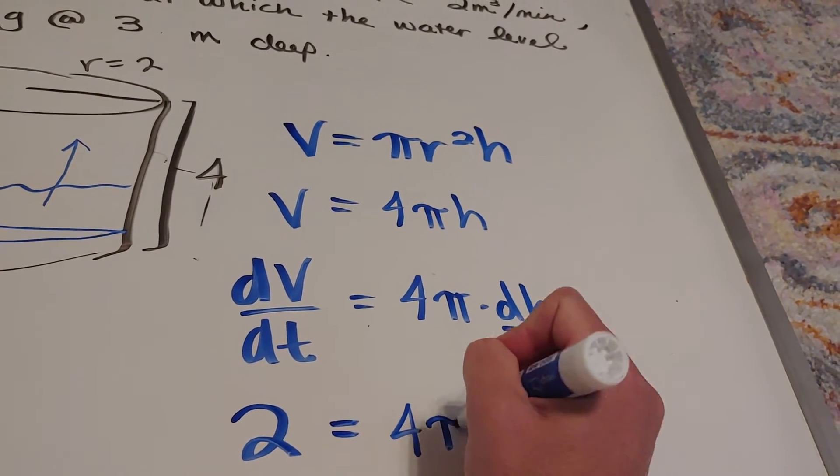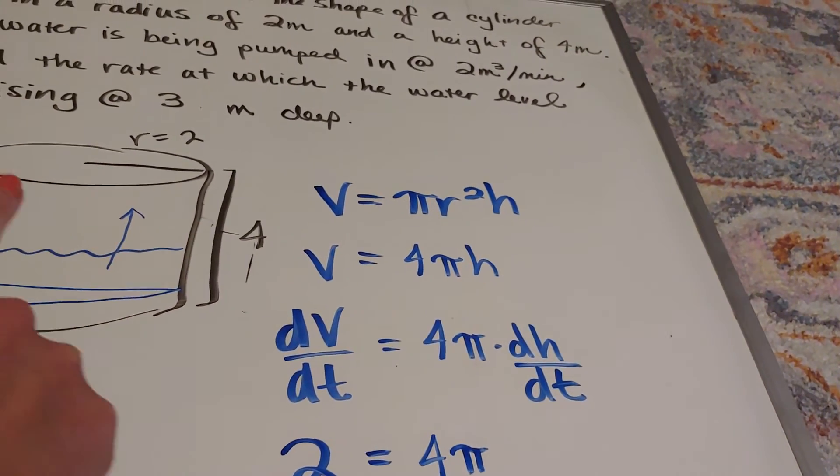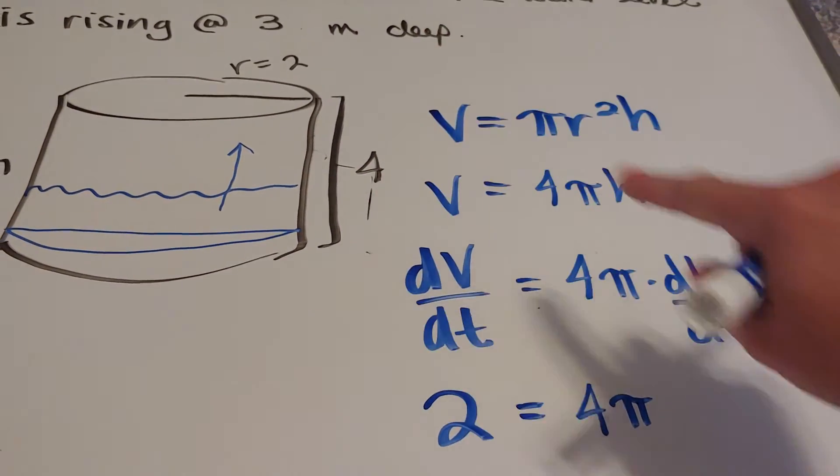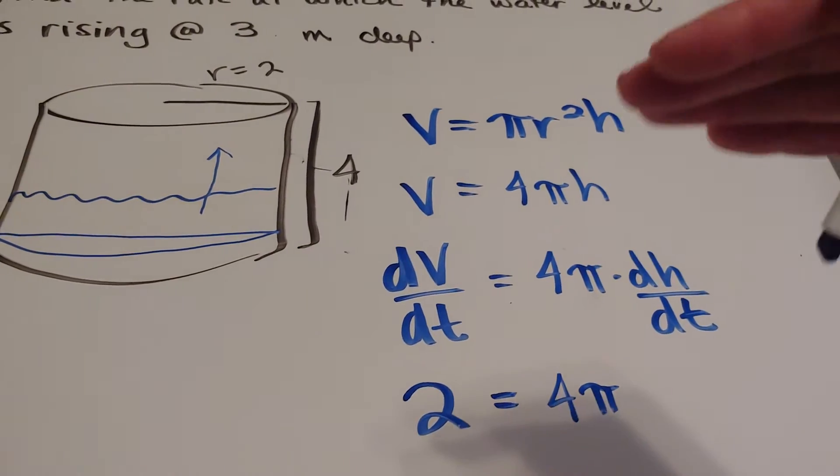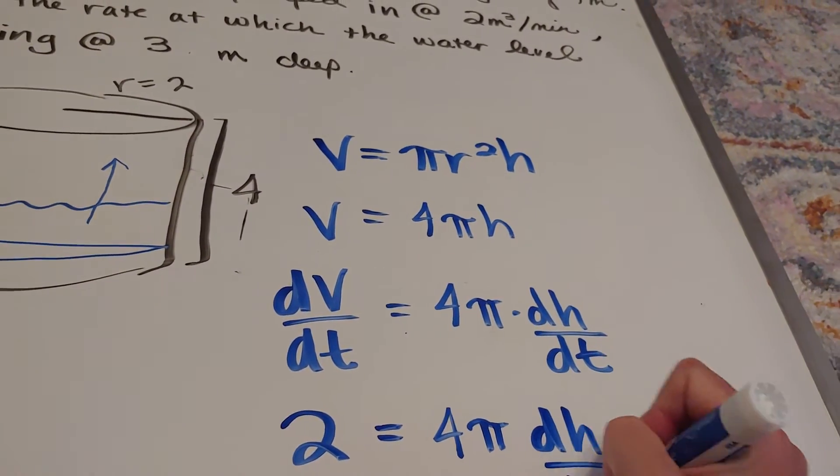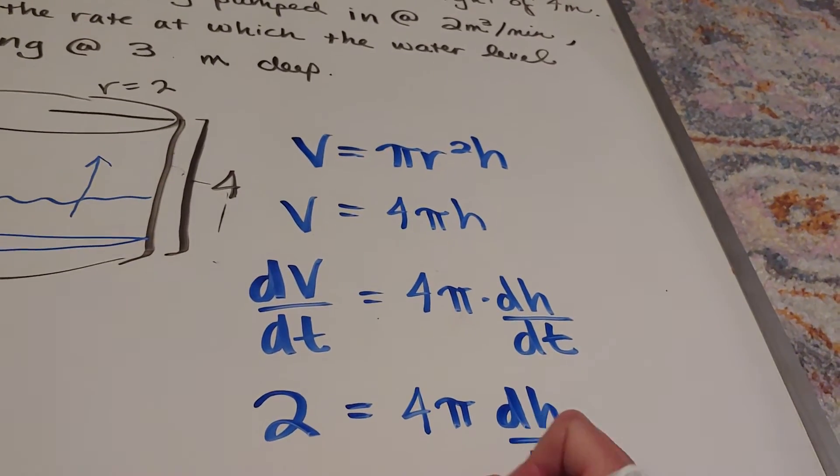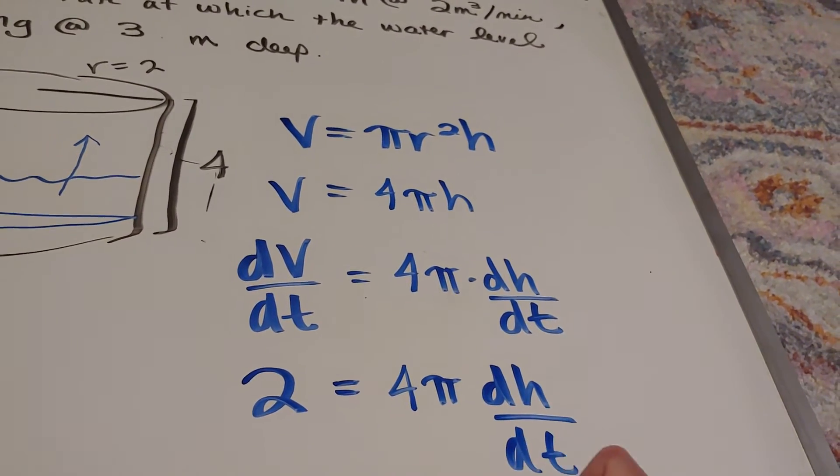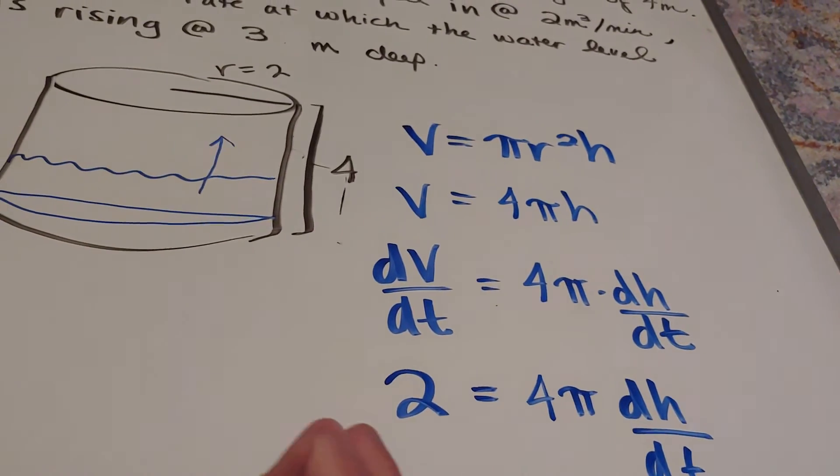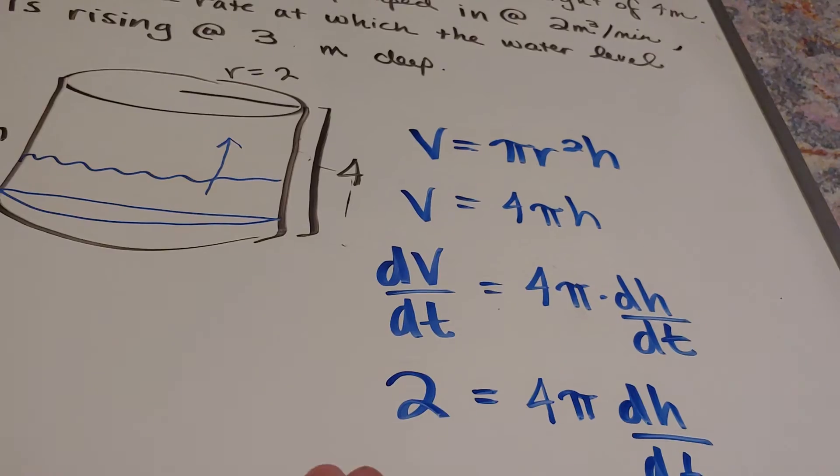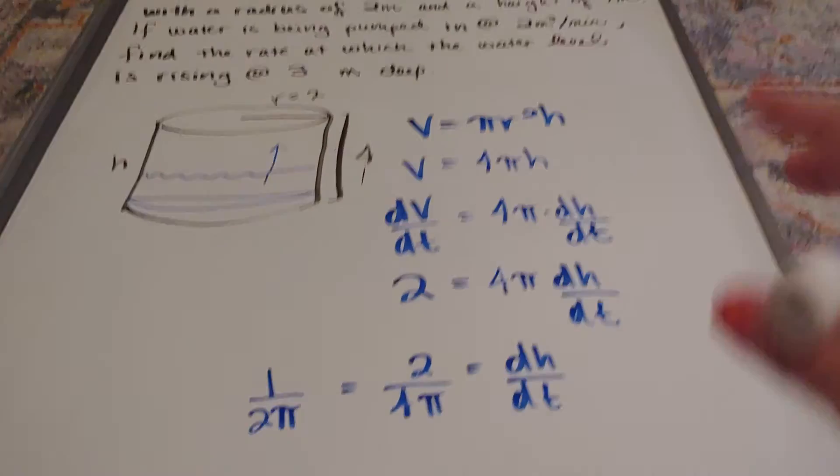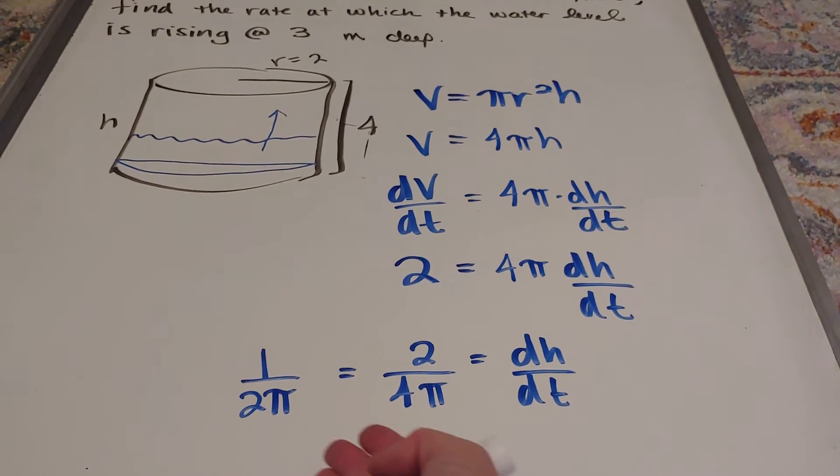Now it turns out, they also told me that we're going to freeze time at a height of 3 meters, but it turns out it doesn't matter what the height is, it's going to actually rise at a constant rate. And what that constant rate is looks like it's 1 over 2 pi.